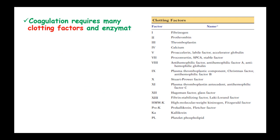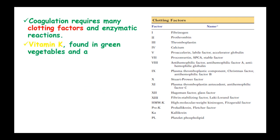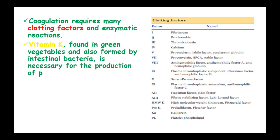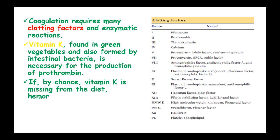Coagulation requires many clotting factors and enzymatic reactions. Vitamin K, which is found in green vegetables and also formed by intestinal bacteria, is necessary for the production of prothrombin. If vitamin K is missing from the diet, hemorrhagic bleeding disorders can develop in patients.